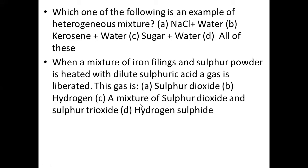Rijun, roll number 26, ninth red. Read: when a mixture of iron filings and sulphur powder is heated with dilute sulphuric acid, a gas is liberated. This gas is — A: sulphur dioxide; B: hydrogen; C: a mixture of sulphur dioxide and sulphur trioxide; D: hydrogen sulphide.